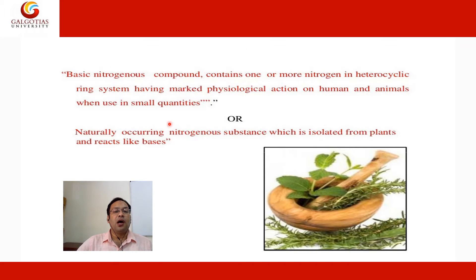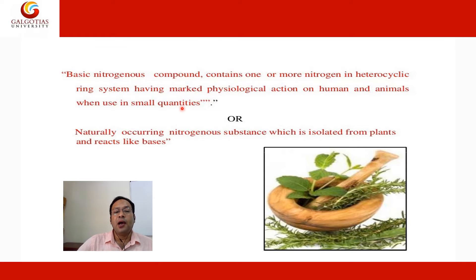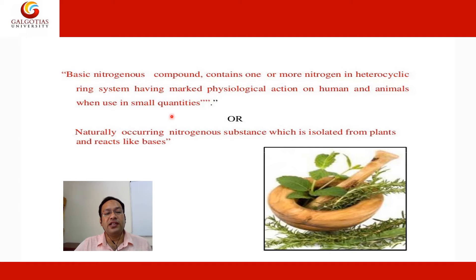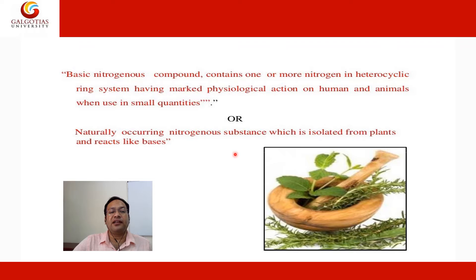Alkaloids are basically basic nitrogenous compounds containing one or more nitrogen atoms in their heterocyclic ring system, having marked physiological action on humans and animals when used in small quantities. The nitrogen can be in the ring or outside the ring.